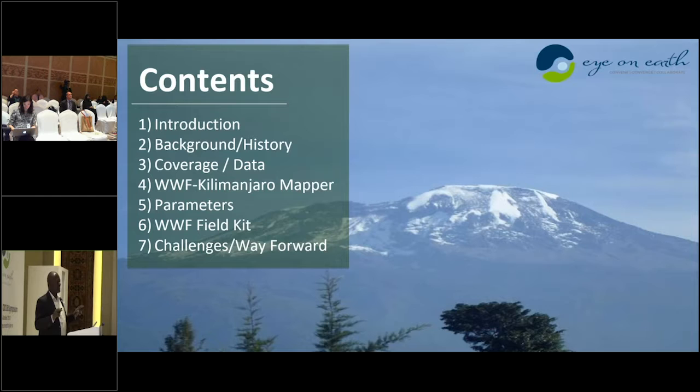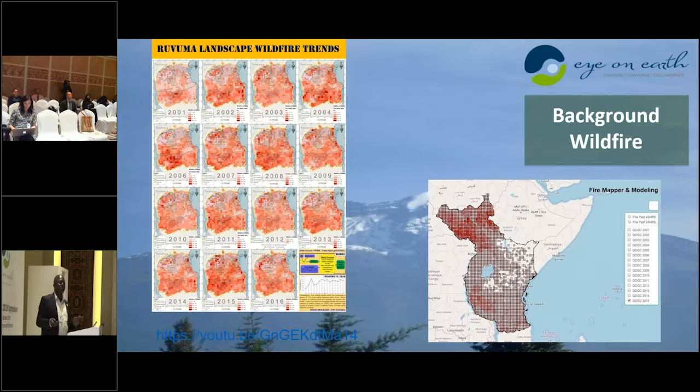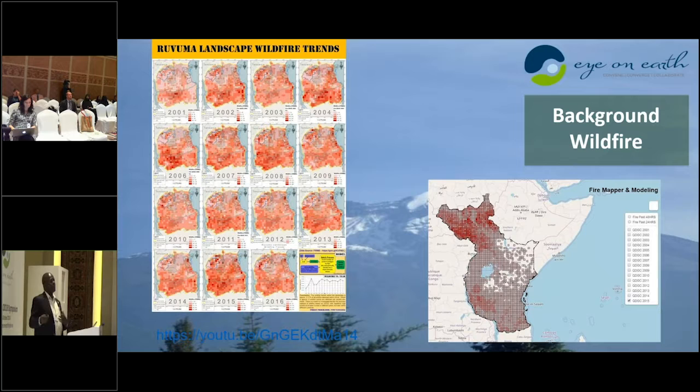Looking at what WWF is doing — one of the challenges we have in Africa, Tanzania, and most tropics is fire, wildfire. This is the landscape between Tanzania and Mozambique, and this is a wildfire — it's a yearly thing. We rely on prescribed fire, early burning we call it, and thereafter fire breaks. When you have daily fire information it's just for suppression, which is too late.